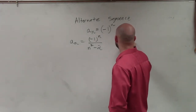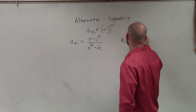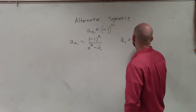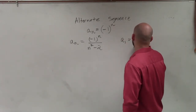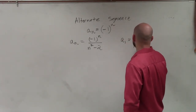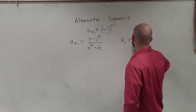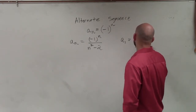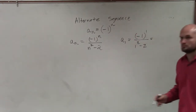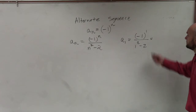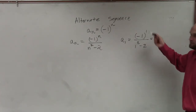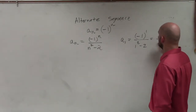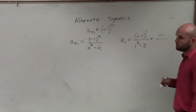So a sub 1 equals negative 1 raised to the first power, times 1 squared minus 2. Well, negative 1 to the first power is negative 1. 1 squared is 1.